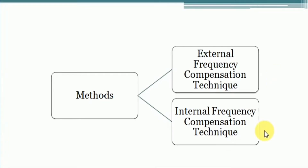In the internal frequency compensation technique, this is mainly used when considering only ICs in the application. For example, the IC741 chip provides compensation internally using a built-in lag compensation network. Here, one capacitor is connected directly from the input stage to the output stage, ranging in value from 10 to 30 picofarads, and it is fabricated internally. We call this type of compensation Miller effect compensation, and these ICs are called compensated op-amp ICs.